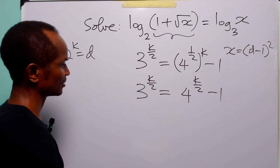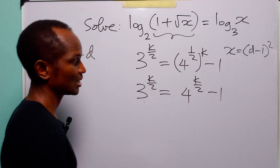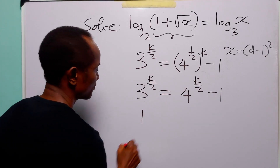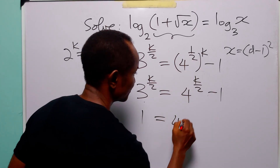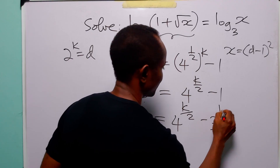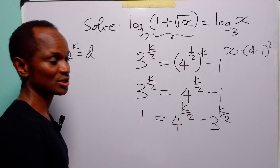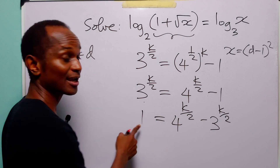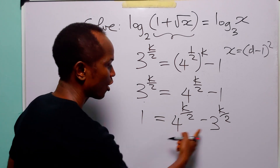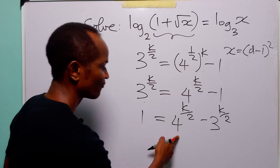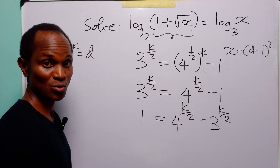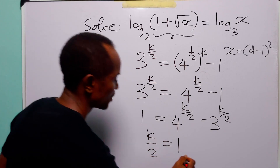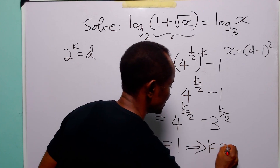Now let us rearrange this equation. Let us take three over to the right-hand side and take one over to the left-hand side. Minus one going over the equality sign becomes plus one, and plus three going over the equality sign becomes minus three. Now look at this equation: four to the power k over two minus three to the power k over two is equal to one. We know that four minus three equals one, so k over two must equal one, and therefore k is equal to two.